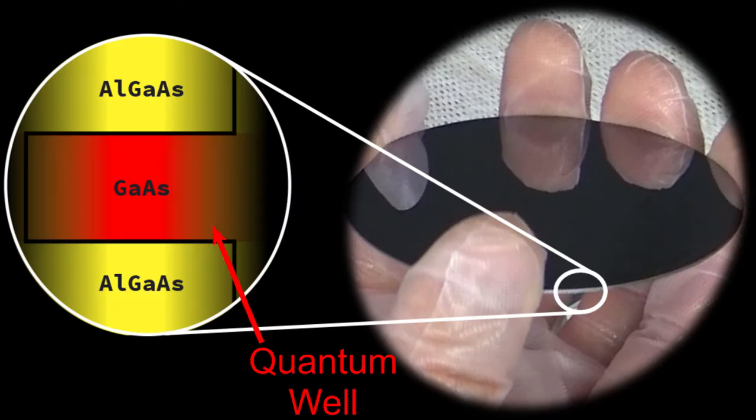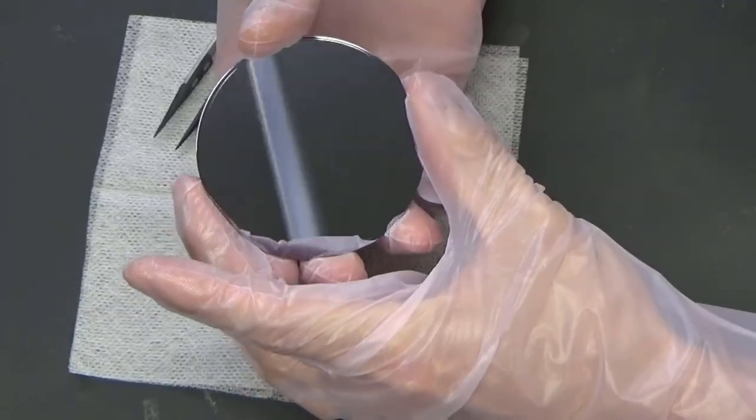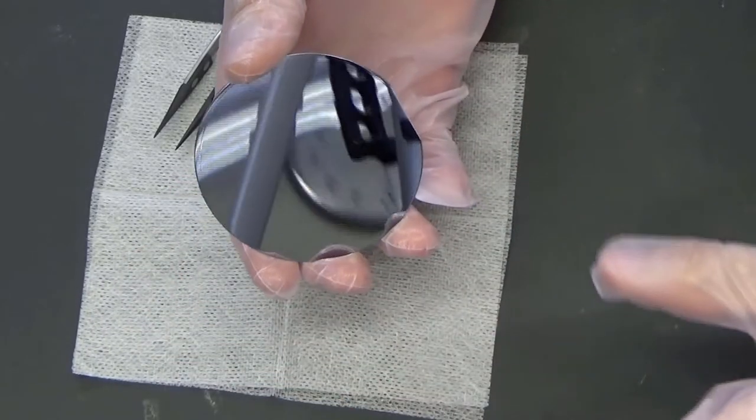We begin our device fabrication with a semiconductor wafer containing a quantum well, which has been created out of layers of aluminum gallium arsenide and gallium arsenide.